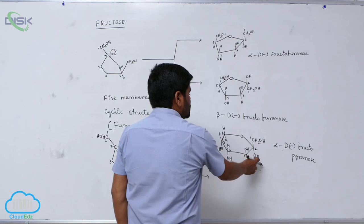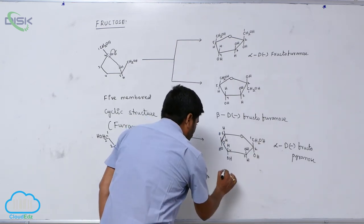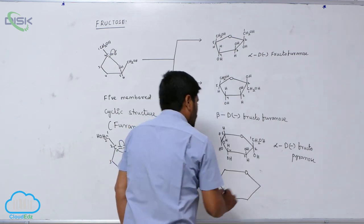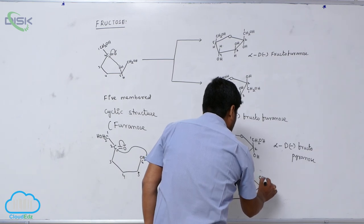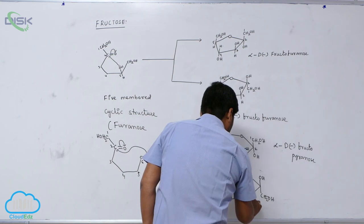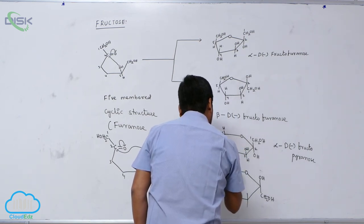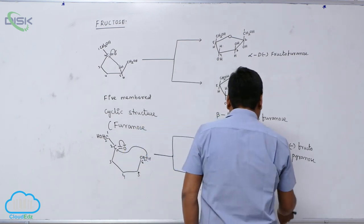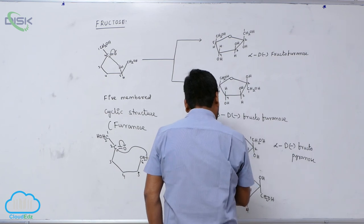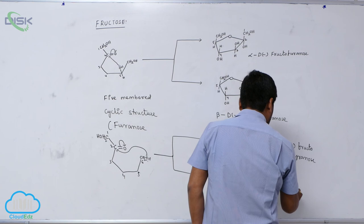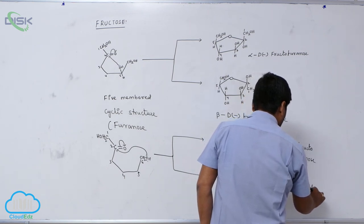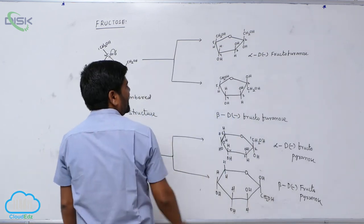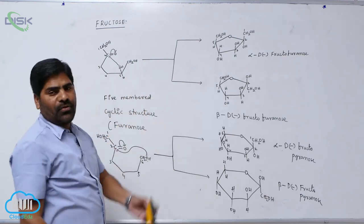If you want beta, just change the hydroxyl position and primary alcoholic linkage. Everything else is the same: OH is above, CH2OH is below. OH, OH, OH — the remaining are hydrogen. This is known as beta D-minus fructopyranose. So these are the cyclic structures of the fructose molecule.